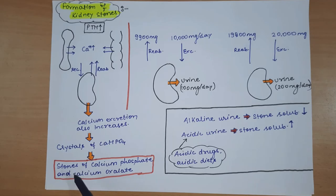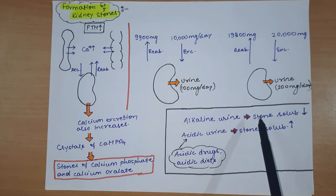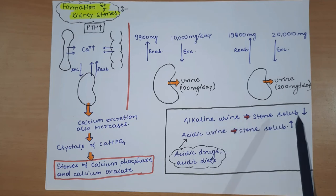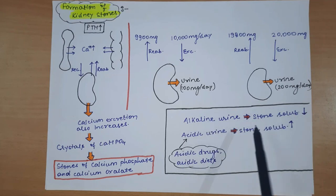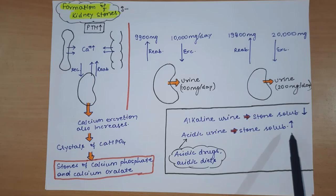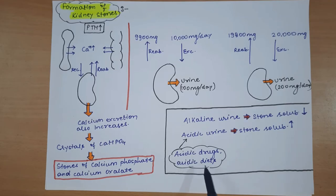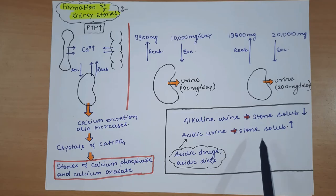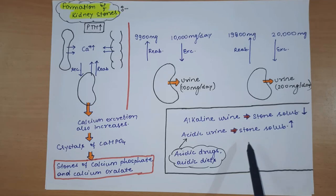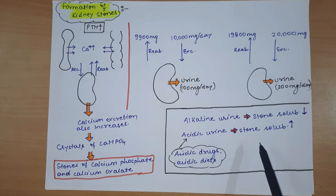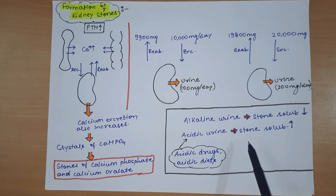Calcium phosphate and calcium oxalate stones have different solubility depending on urine pH. In alkaline urine, solubility of these stones improves, while in acidic urine, stones can increase. So these are the total four effects of primary hyperparathyroidism.